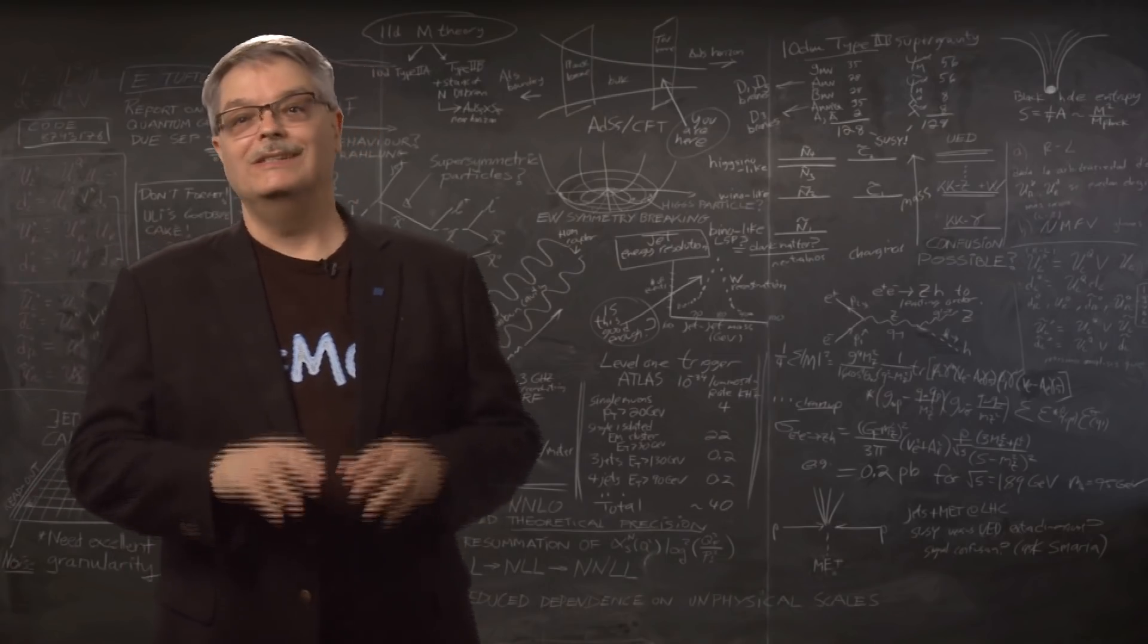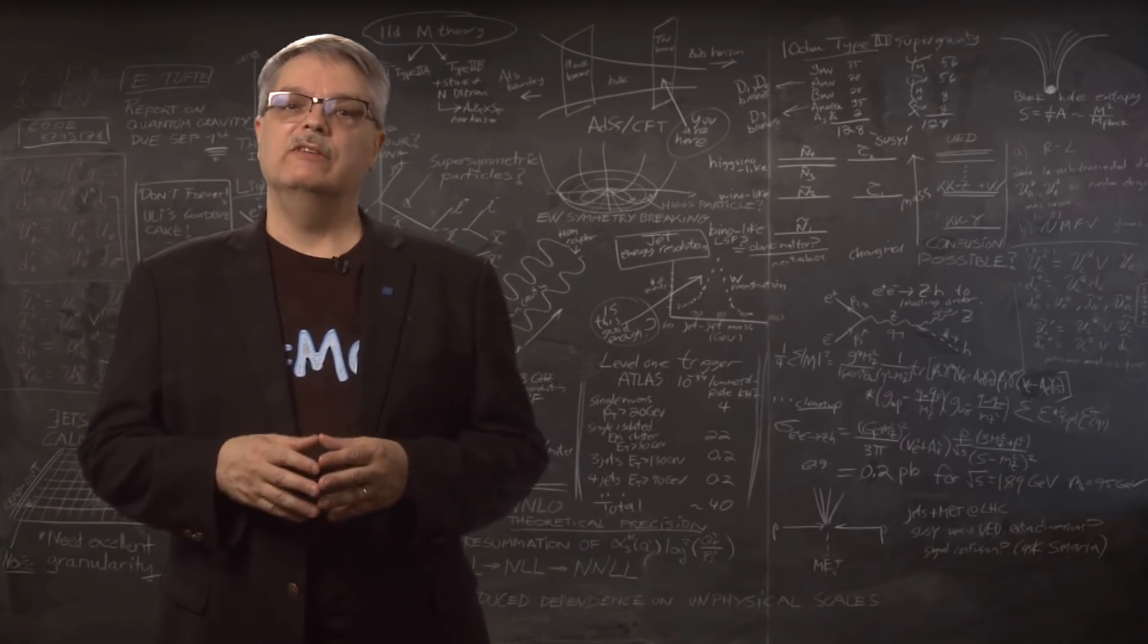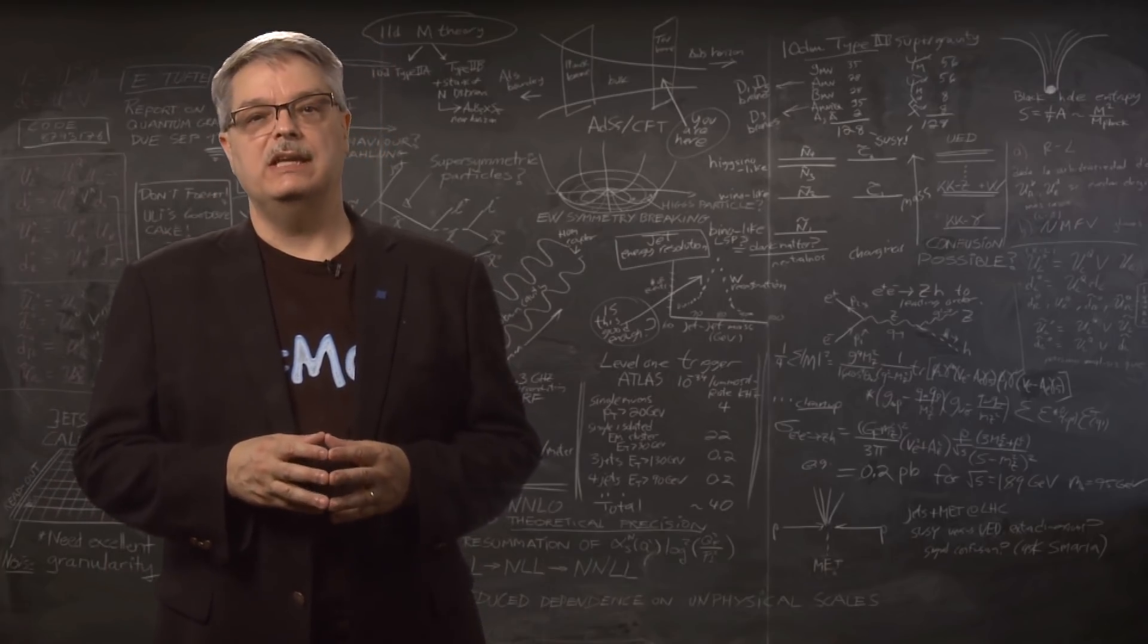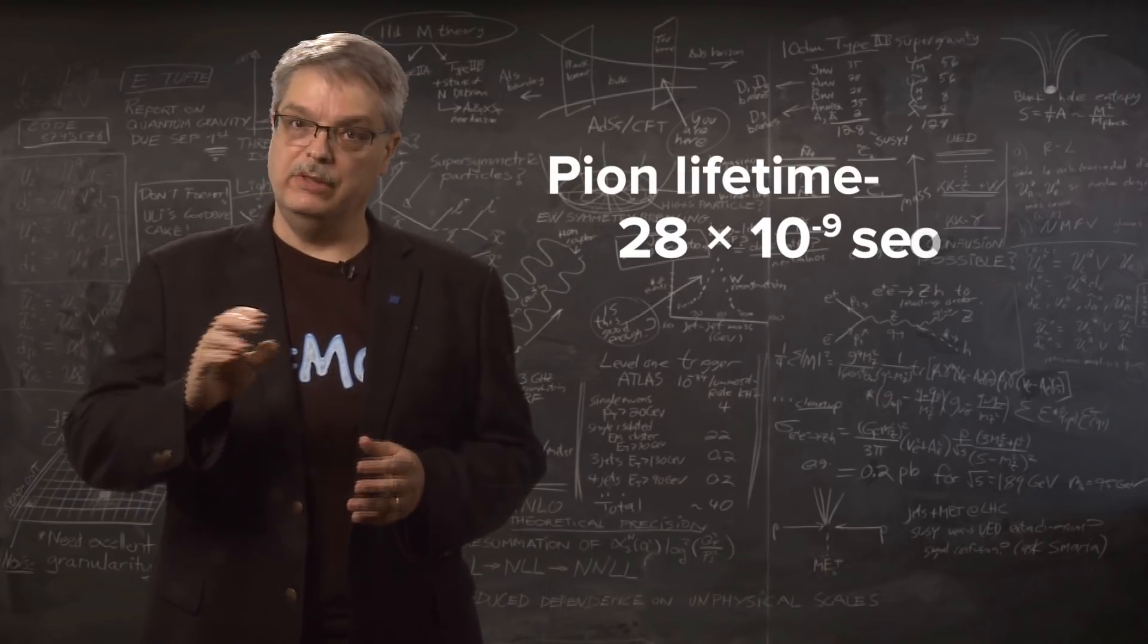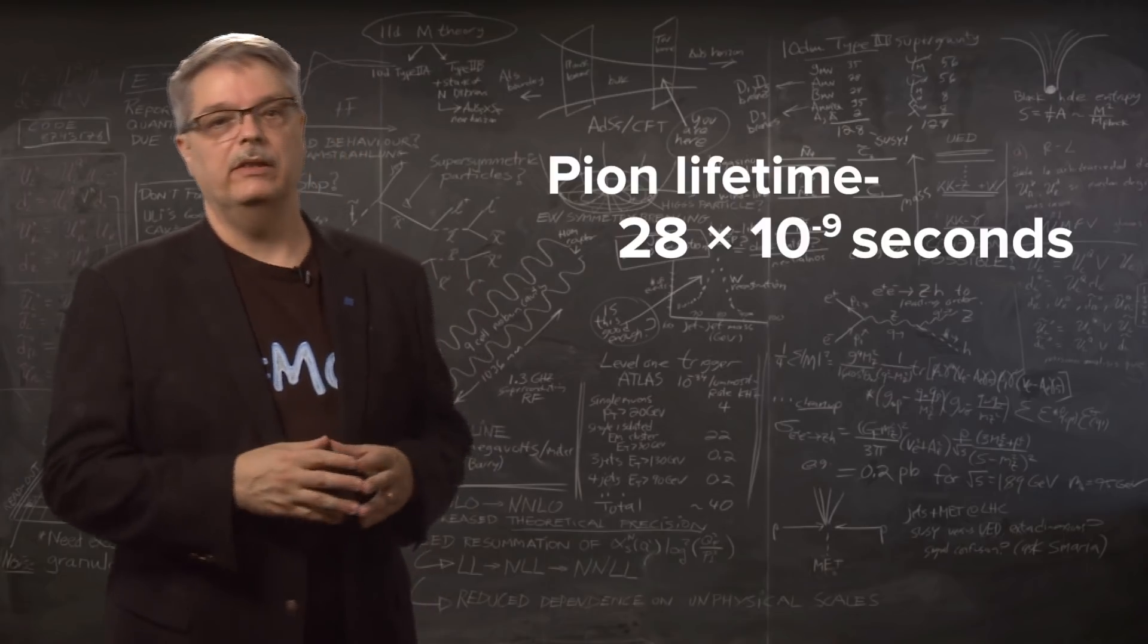The lifetime of a pion is easy to measure. Suppose we make a bunch of pions that are stationary. We find that they live a characteristic amount of time before they decay. They live 28 billionths of a second. Some live longer and some live shorter, but on average, that's how long they live.